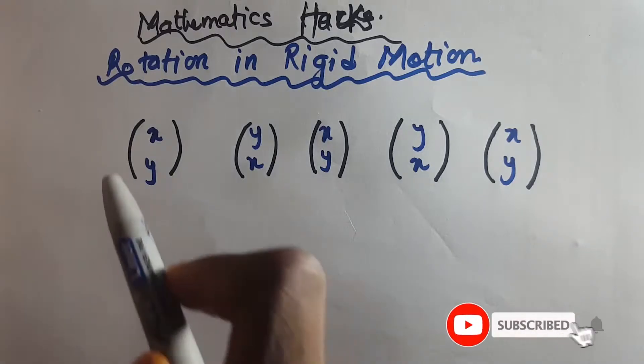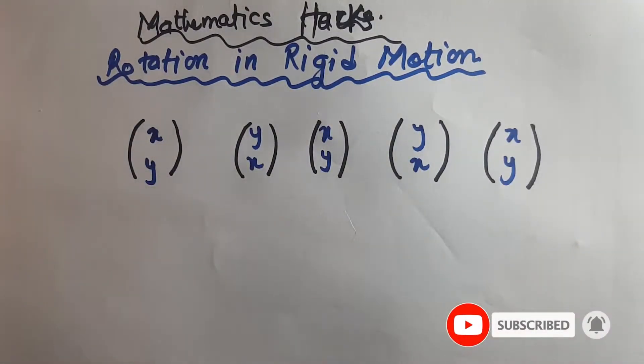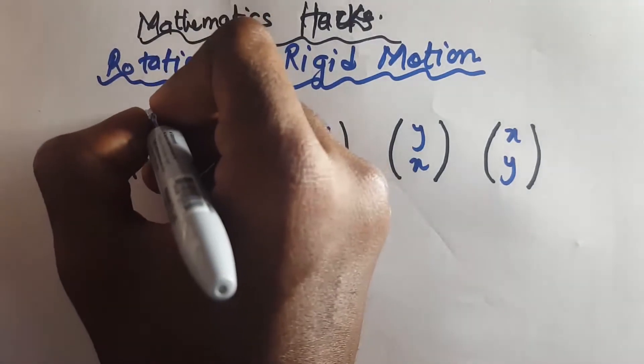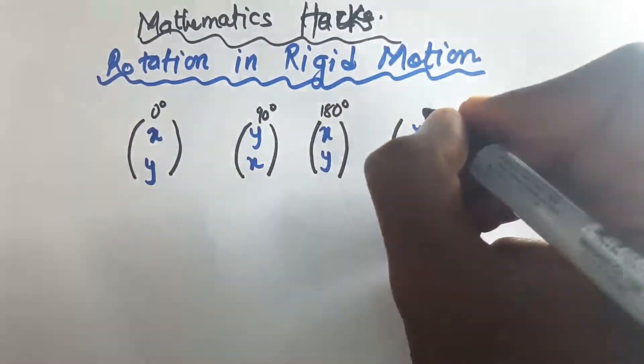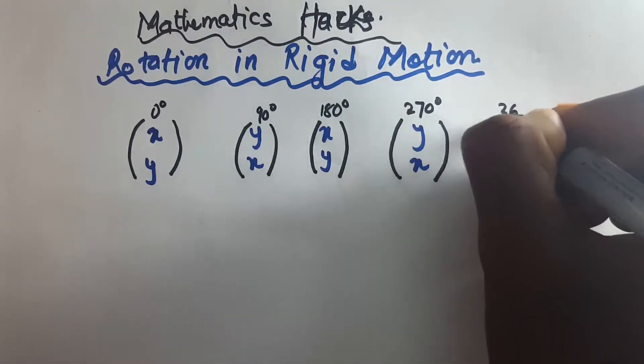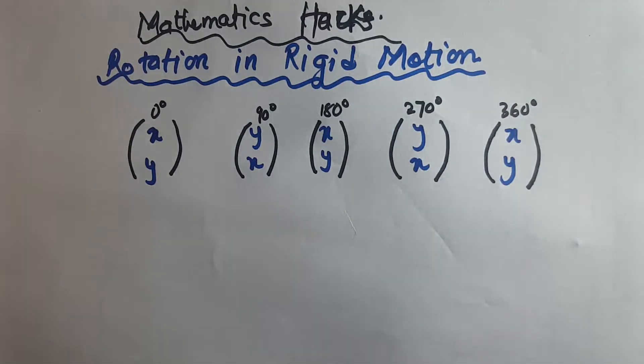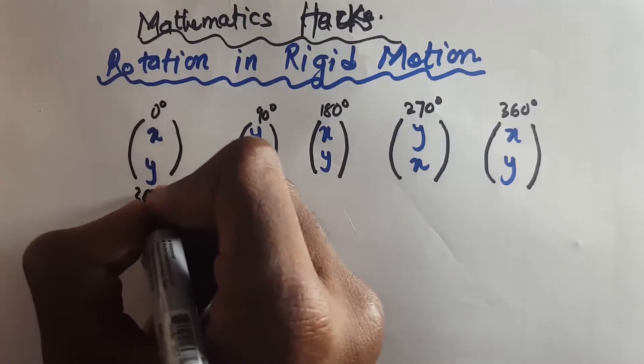In all you have five brackets. The next thing you do is you indicate the angles. So you start from zero, 90, 180, 270, 360. Then you do the opposite for the lower part: 360, 270, 180, 90, then zero.